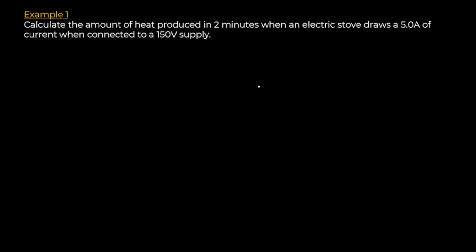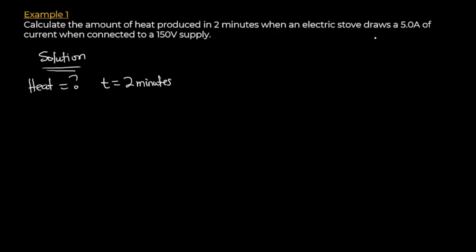Example one: calculate the amount of heat produced in two minutes when an electrical stove draws 5.0 amperes of current when connected to a 150-volt power supply. From the given information: time = 2 minutes, current = 5.0 amperes, and voltage = 150 volts.